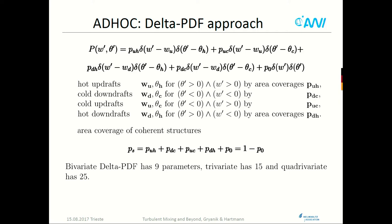For the trivariate case there are 15 parameters, and for the quadrivariate case, 25. In all these cases we solve the problem, but I will talk only about the bivariate case for simplicity.